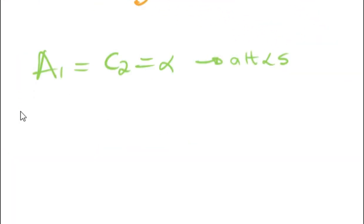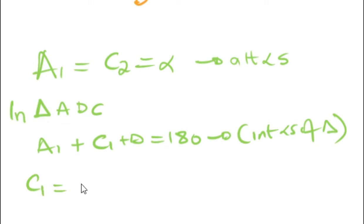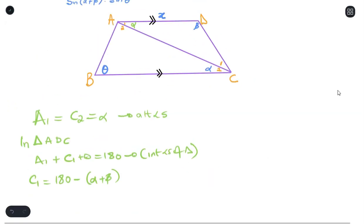In triangle ADC, we understand that those are the interior angles of the triangle. Therefore, it means that C1 equals 180 minus alpha plus beta. So now we have the value for C1.